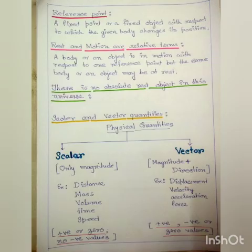Now we will discuss what is a reference point. I want to ask you a question: what is the distance of your school? Immediately the question will come to your mind: from where? If you want to measure any distance, you have to measure it from an initial point. That initial point is the origin, also known as the reference point. A reference point is a fixed point or fixed object with respect to which the given body changes its position.